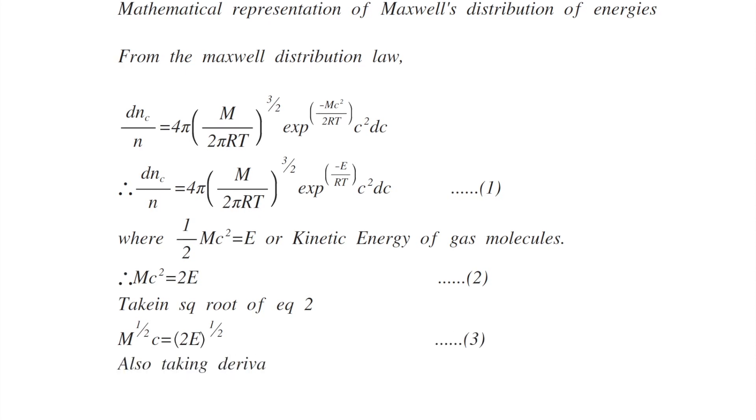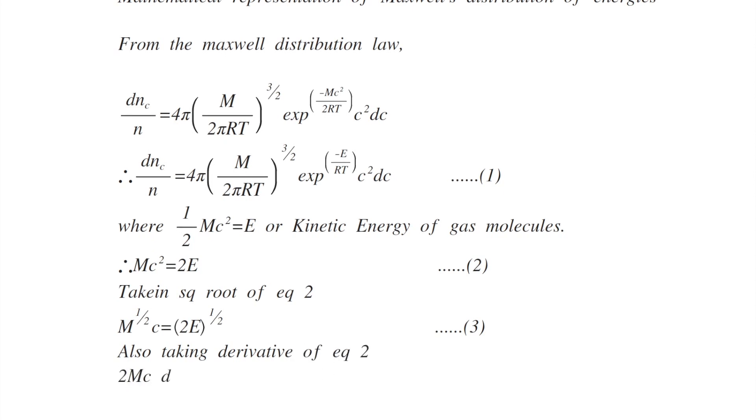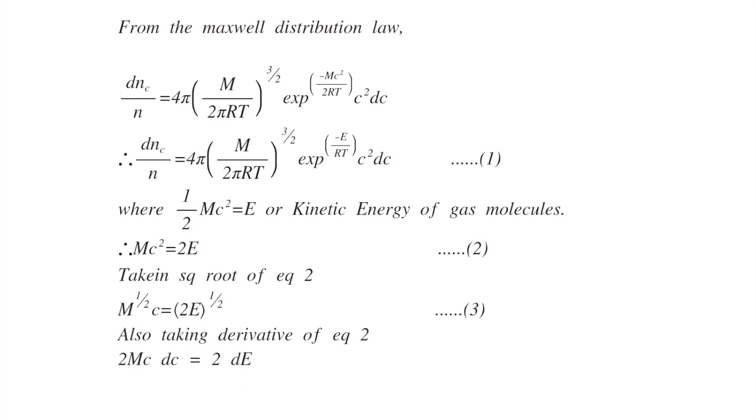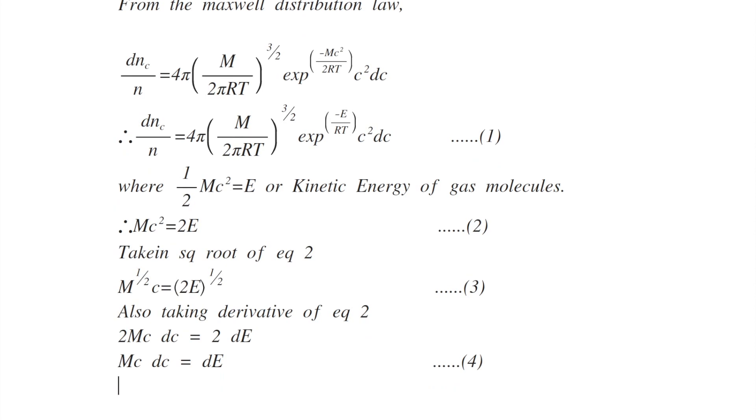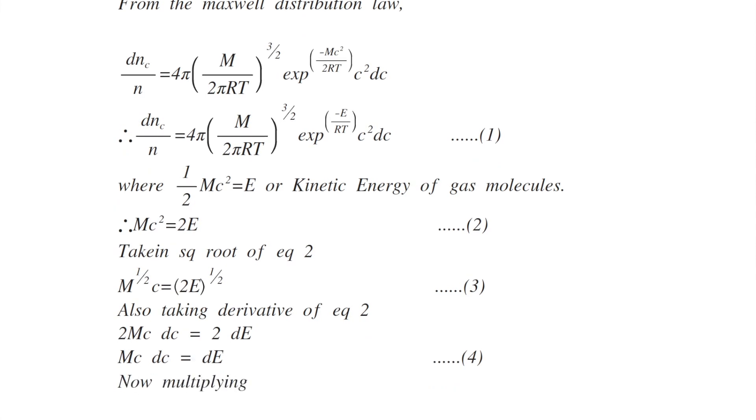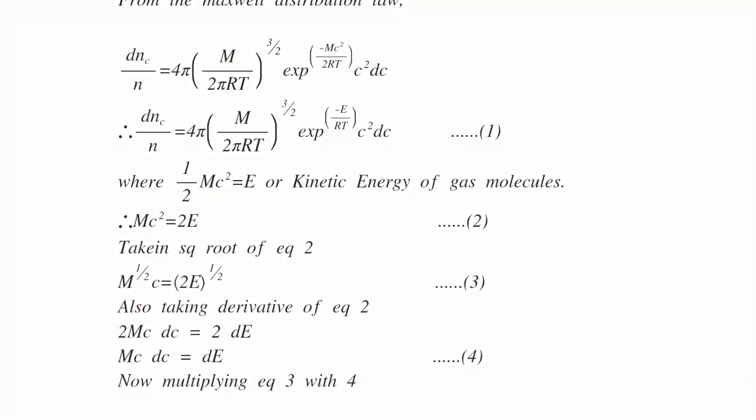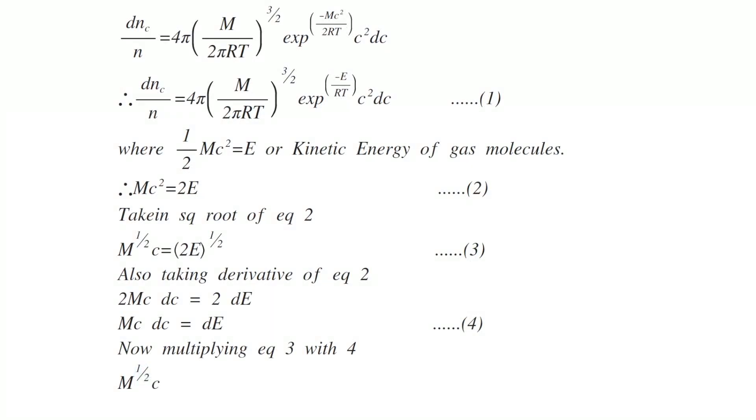Also taking derivative of equation number 2 we get 2mc dc equals 2dE, or mc dc equals dE. This is equation number 4.